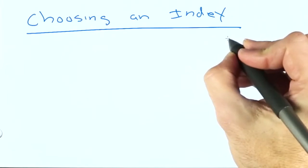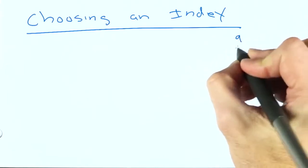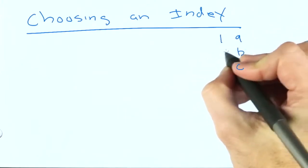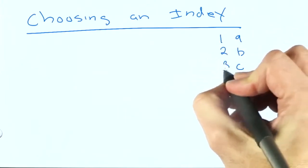Let's say you have a collection with three different indexes on it: an index on A, an index on B, and an index on C. We'll call that query plan 1, query plan 2, and query plan 3.